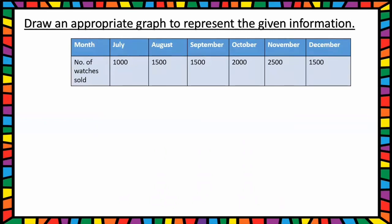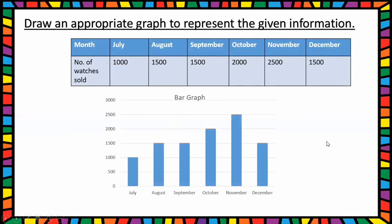Now we can draw a bar graph. Vertically, number of watches sold is written; horizontally, months. July: 1000 watches sold. One unit represents 500 watches. Here a bar is showing till here. Then August 1500, September again 1500 watches sold, October 2000 watches sold.